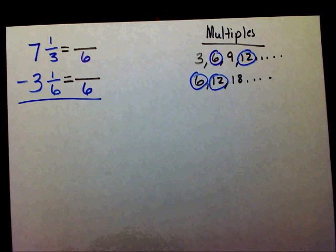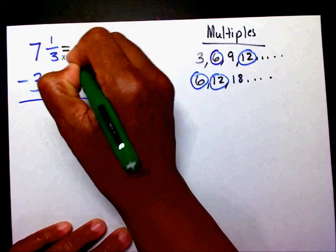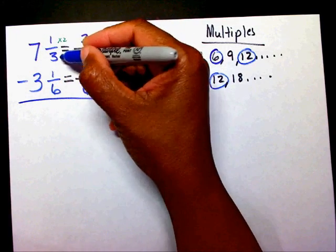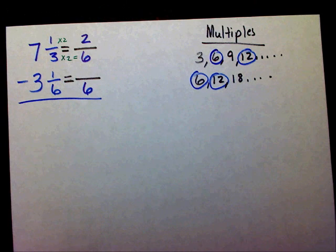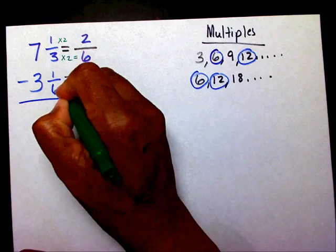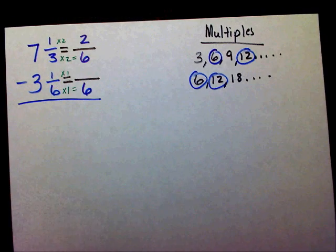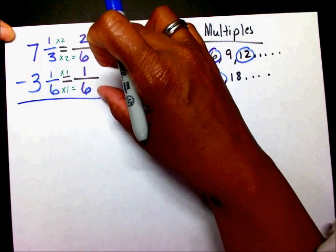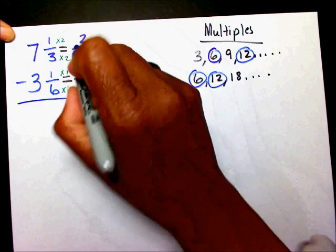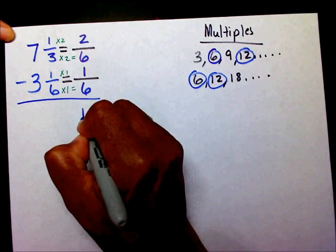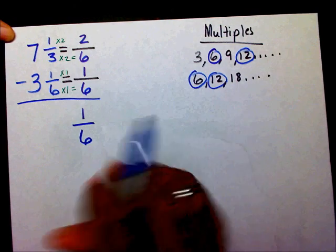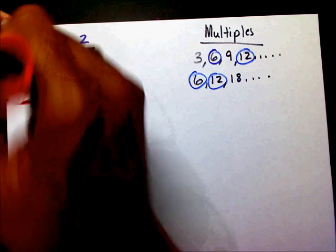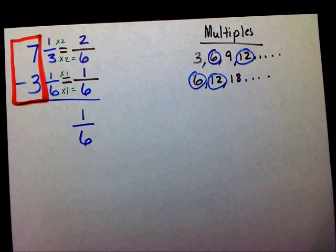Now I need to find my new numerator. So 3 times 2 is 6. So 1 times 2 is 2. Remember, whatever I multiply in the bottom, I have to multiply the same thing in the top. And I know that 6 times 1 is 6, and 1 times 1 is 1. Now that I have my same denominator, now is the time for me to subtract 2 minus 1. What is 2 minus 1? 2 minus 1 is 1. And I'm going to keep my new denominator. But this is not all of my answer. I can't forget about this over here. 7 minus 3. Well, what is 7 minus 3? 7 minus 3 is 4.